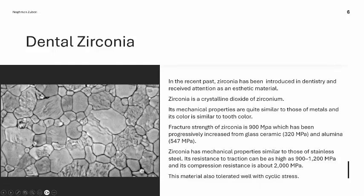In the recent past, zirconia has been introduced in dentistry and received attention as an aesthetic material. It is quite a tough and strong material. Zirconia is a crystalline dioxide of zirconium; its mechanical properties are quite similar to those of metals and its color is similar to tooth color. Fracture strength of zirconia is 900 MPa, which has been progressively increased from glass ceramic at 320 MPa and alumina at 547 MPa.